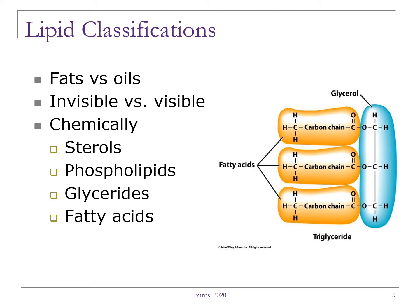Lipids can also be classified based on their chemical structure. Four different classifications chemically include sterols — so think cholesterol — phospholipids, your glycerides such as your mono, di, and triglycerides, and the individual fatty acids.